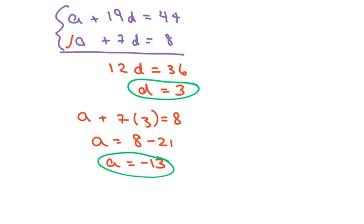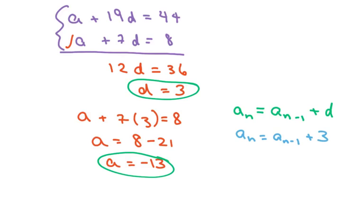Now we have to write a recursive formula. A sub n, which is our current term, equals our previous term. So a sub n means current term; a sub n minus 1 equals your previous term, plus your common difference. So that's a sub n equals a sub n minus 1 plus 3 — my common difference is 3. That's your recursive formula; it's that easy.